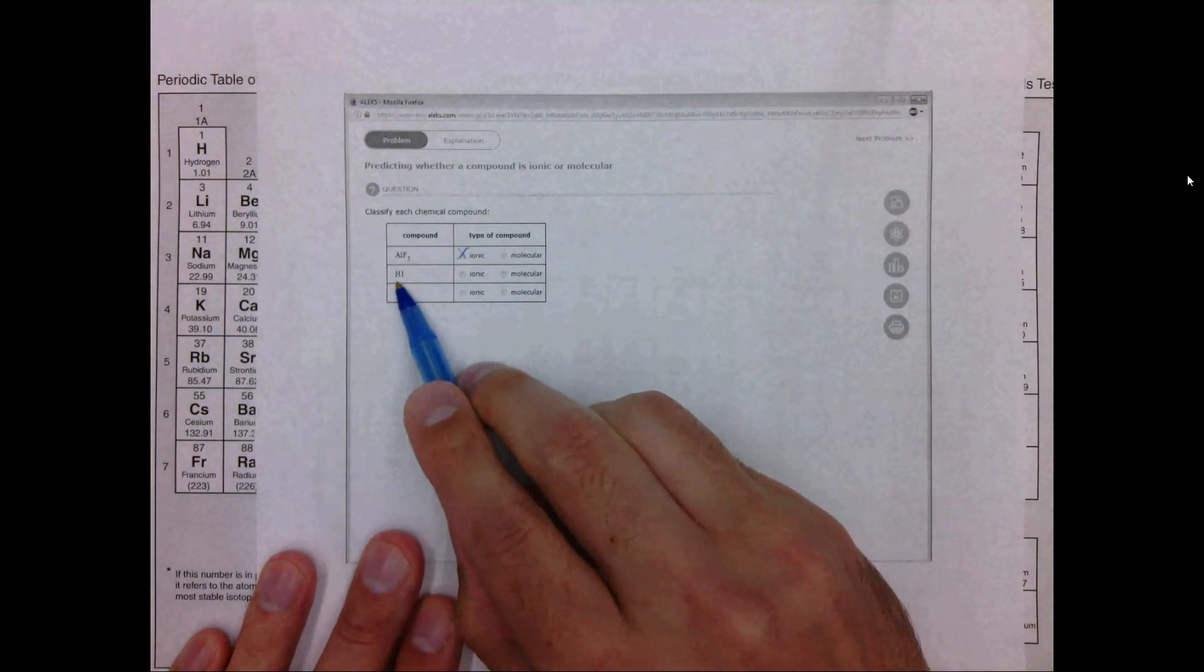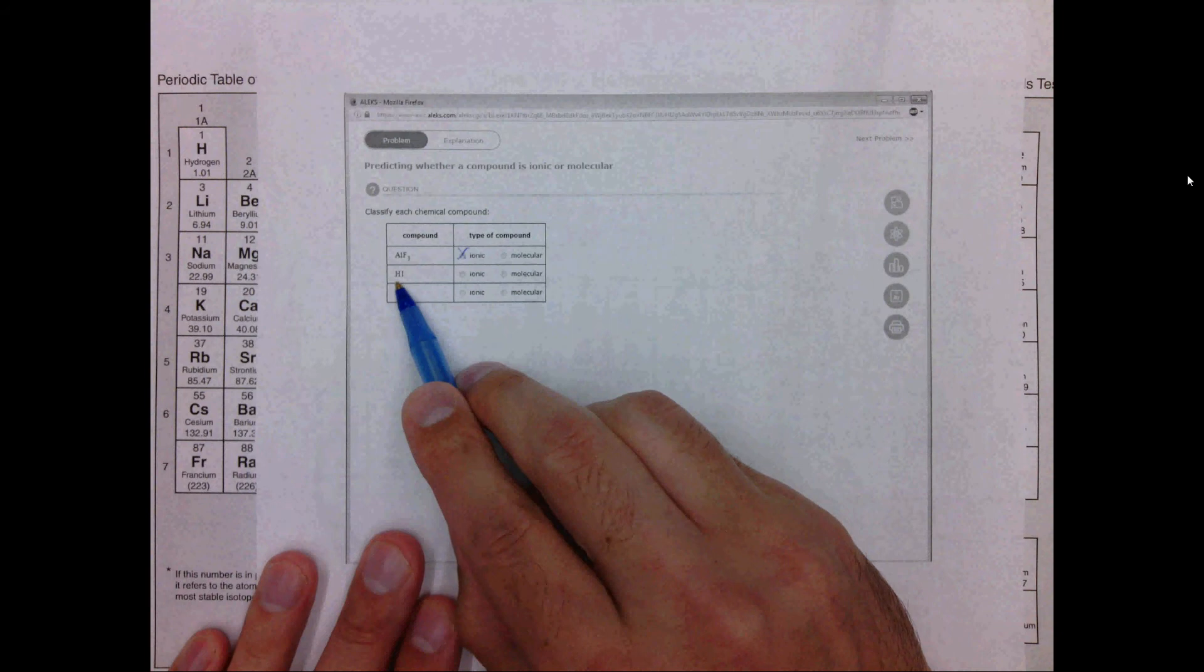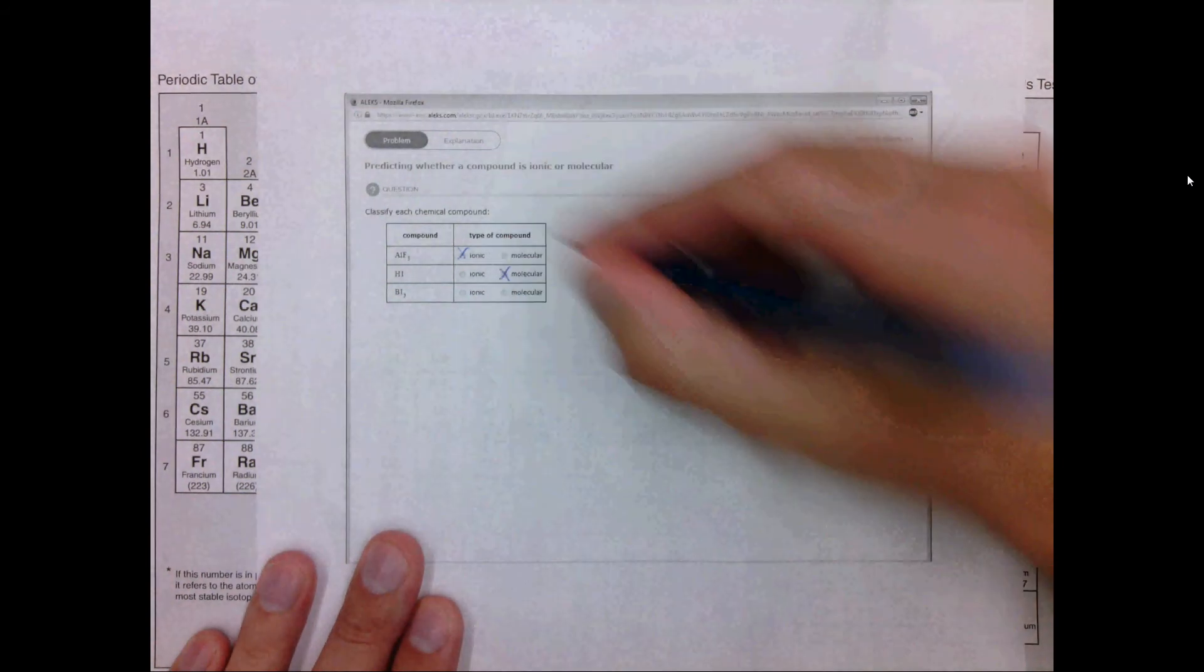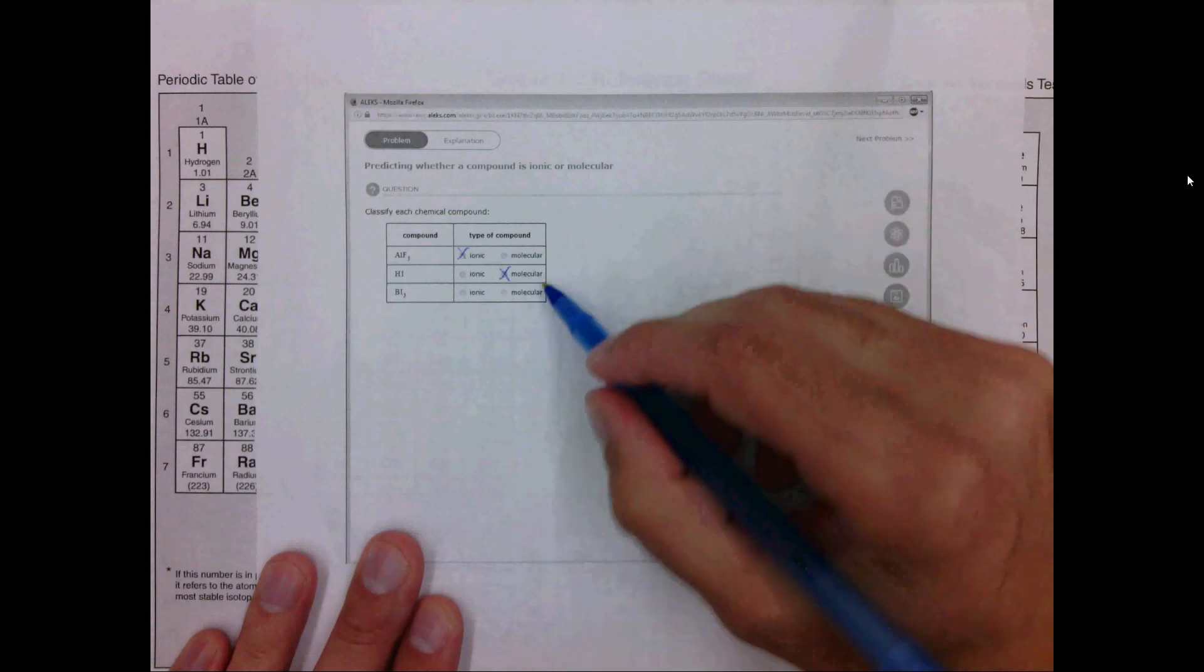The next one is HI. HI is a covalent compound because it's two non-metals, hydrogen and iodine. So this is molecular, or covalent is another word for molecular.